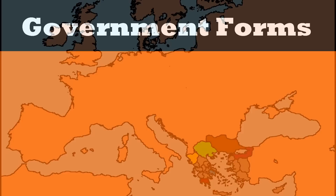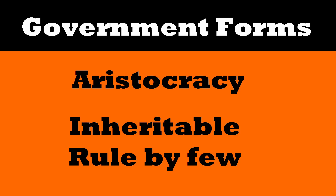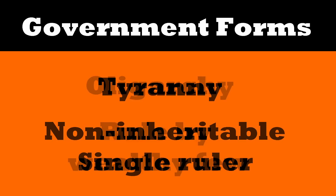Each city-state fit one of five government forms: monarchy — single hereditary ruler; aristocracy — rule by hereditary nobles; democracy — rule by the people; oligarchy — rule by the wealthy; and tyranny — rule by a single person in a non-hereditary way.